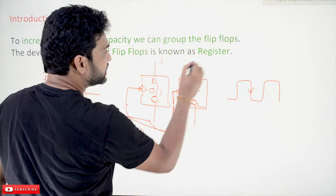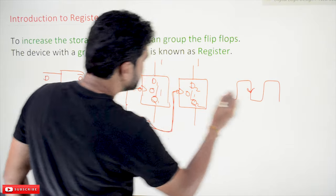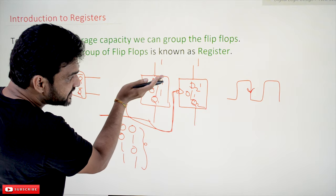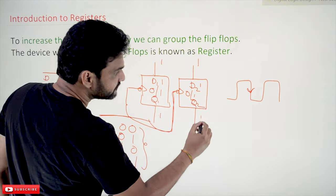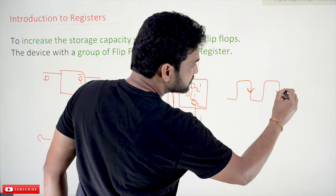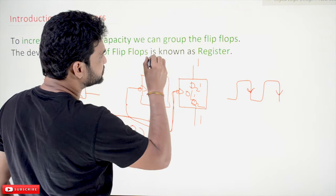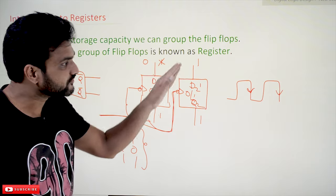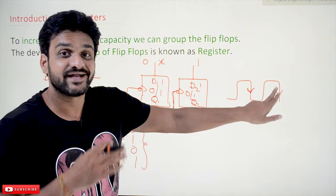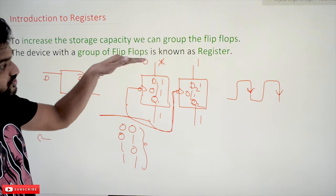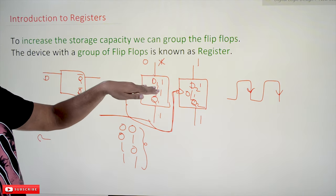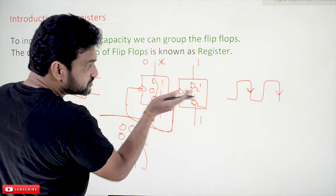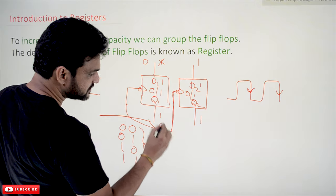For example, if you have 1,1 here, in the first negative edge this 1,1 will get stored onto this device, and immediately the output is going to change to 1,1. In another clock cycle, if the inputs are changed to 0,1, then in the next negative edge these values will get stored onto this D flip flop. So 0,1 will get stored onto these two D flip flops and they will show as 0,1. This is an important point to understand.